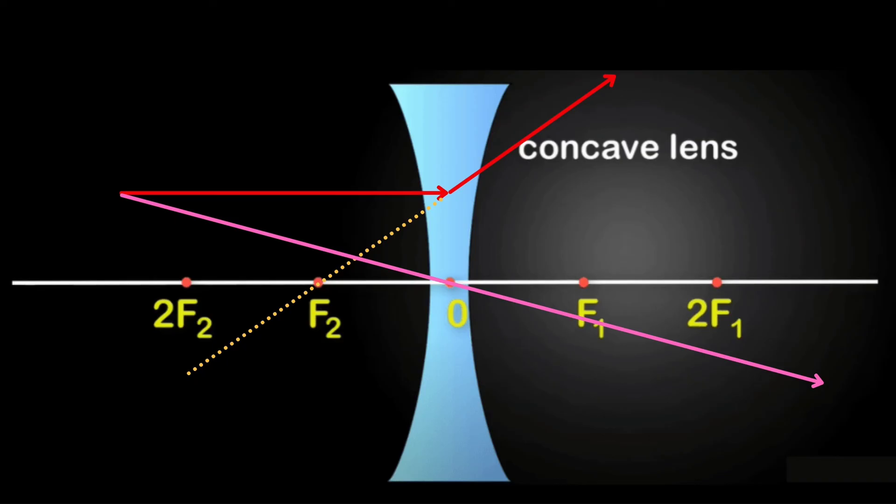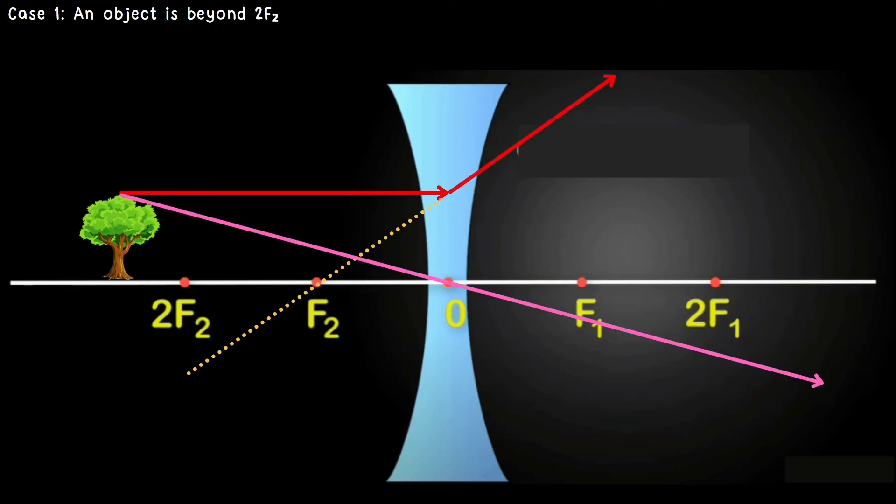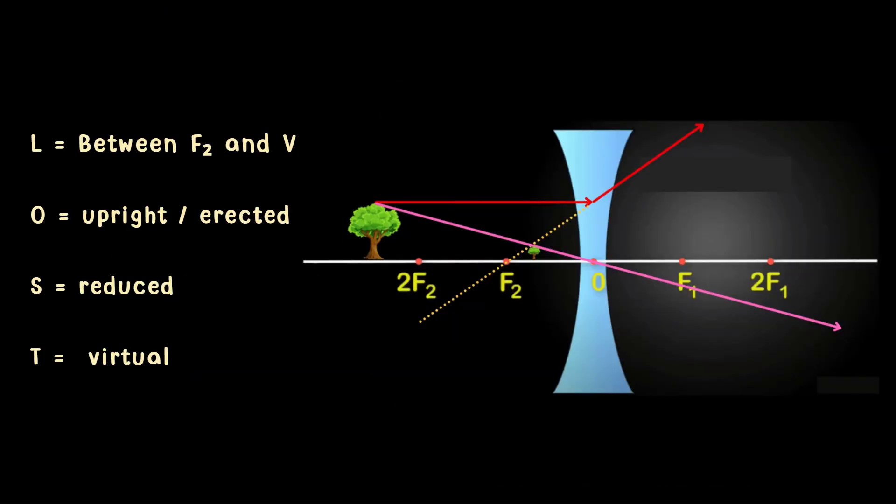Let us have an example. Here, case number one, an object is beyond 2F2. Ray 1: incident ray is parallel to our principal axis and will diverge. The other one hits our optical center and there was an intersection, therefore this is our image. Let's apply LOST. Where is the image located? This is between F2 and V, the vertex or the optical center. What is the orientation? This is upright. The size of the image is reduced and the type is virtual since the image is upright.